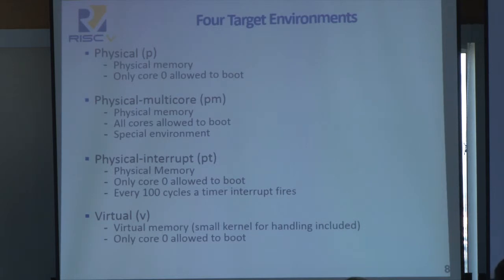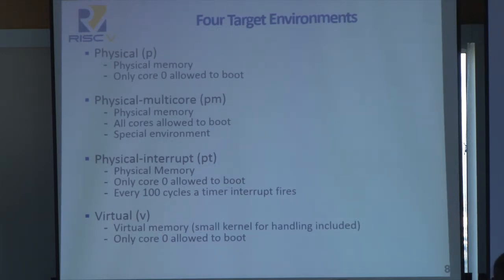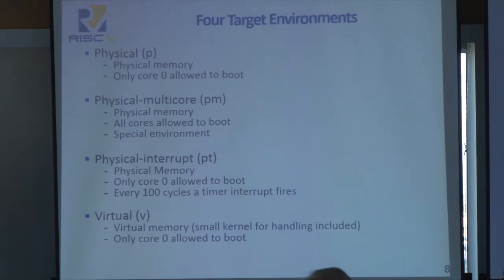Next we'll move on to what the four target environments are inside the RISC-V test target environments. They are physical, physical multi-core, physical interrupt, and virtual. The physical environment, indicated by a P in the generated binaries, simply uses physical memory and only boots one core. It's the simplest one, and all of the other three will derive some elements of the execution from it. Physical multi-core is similar to physical P, however it will boot all of the cores in your design, not just core zero.